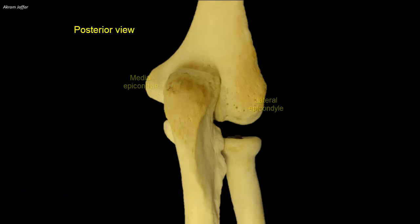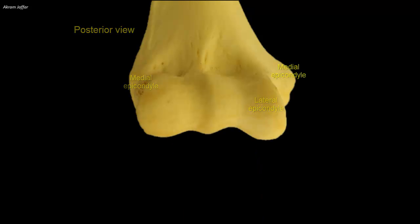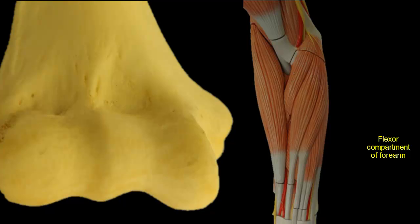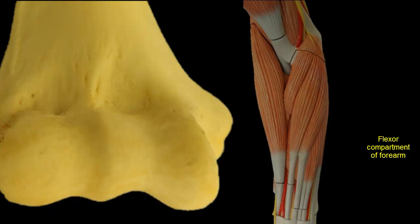The medial and lateral epicondyles are subcutaneous and easily palpated on the medial and lateral aspects of the elbow region. The knob-like medial epicondyle is more prominent than the lateral. The medial and lateral epicondyles provide attachment of muscles of the flexor and extensor compartments of the forearm. The anterior surface of the medial epicondyle provides a common origin of the superficial muscles of the flexor compartment: pronator teres, flexor carpi radialis, flexor digitorum superficialis, palmaris longus, and flexor carpi ulnaris.